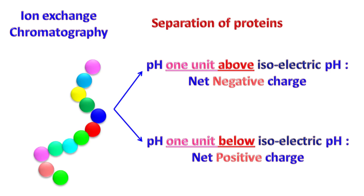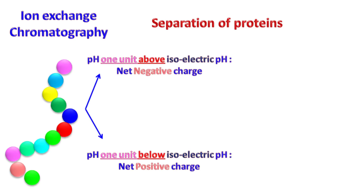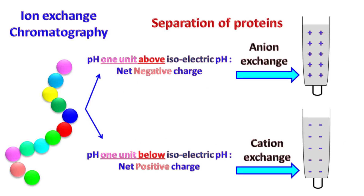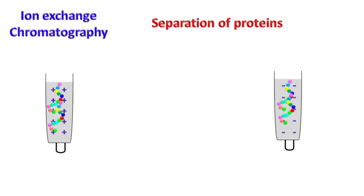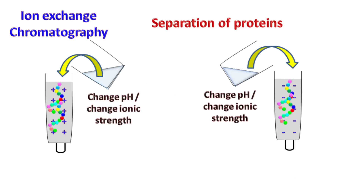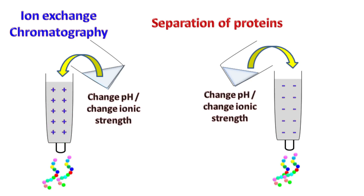Before proceeding further, it must be checked at which pH the protein is stable. If the protein is stable at a pH one unit above the isoelectric pH, then anion exchange chromatography is preferred, as the protein will have a negative charge. If the protein is stable one unit below the isoelectric pH, then cation exchange chromatography is preferred. Once the protein binds to the stationary phase in the column, elution can be done by changing the pH or by changing the ionic strength.